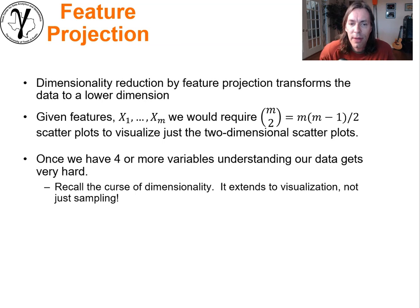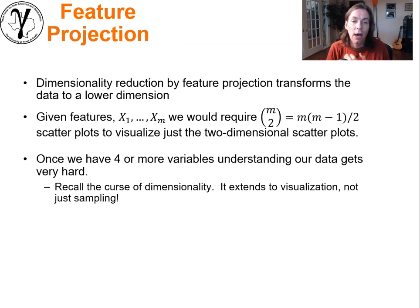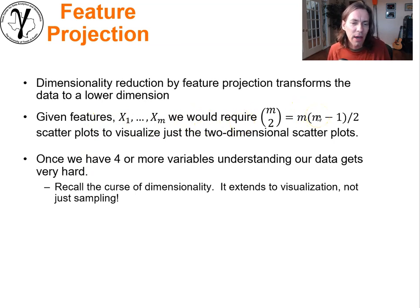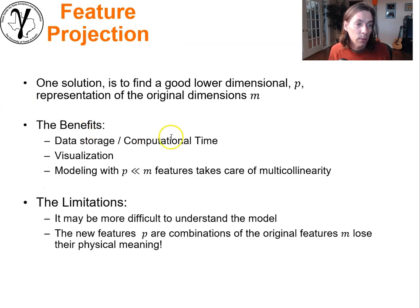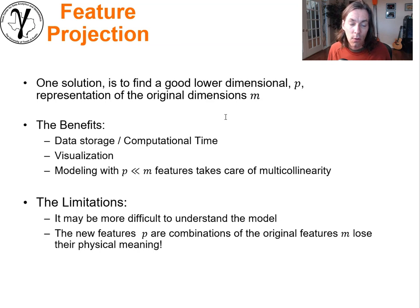Feature projection is another approach to dimensionality reduction. What you do is transform your M features into a lower dimensional space — reduce to a smaller subset of features, usually based on a combination of those original features. Given M features, just imagine trying to understand all the bivariate relationships — that's M times M minus one divided by two unique scatter plots. Once you get to four or more variables, this becomes a lot. We started with M original dimensions and we're going to get down to P.